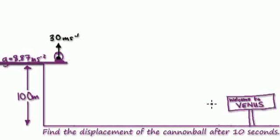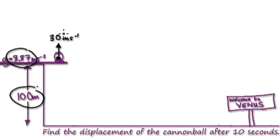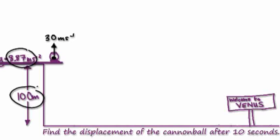Let's give you guys some more practice. So now you're on a cliff, which happens to be on Venus. The height of the cliff is 100 meters. Gravity on Venus is given. You're going to shoot a cannonball vertically upwards at 30 meters per second.